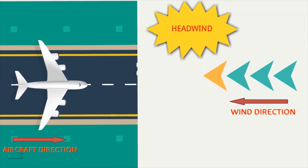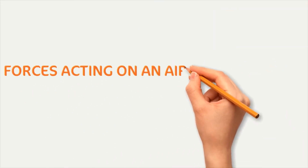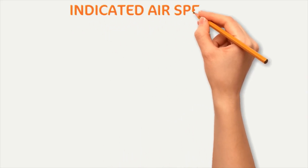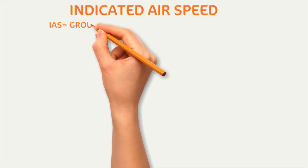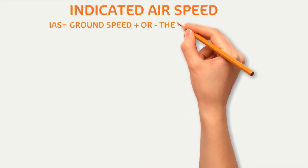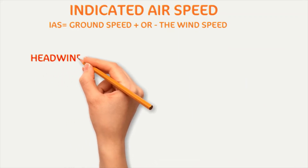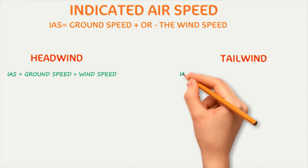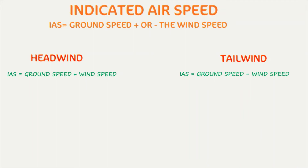If you want to understand more about lift, please watch the video titled 'Forces Acting on an Aircraft in Flight' in the same channel. Every aircraft has to reach a particular indicated airspeed on the runway before taking off. Indicated airspeed is the ground speed of the aircraft plus or minus the wind speed. If the condition is headwind, the wind is added to the ground speed to get the indicated airspeed. If the condition is tailwind, the wind is subtracted from the ground speed to get the indicated airspeed.